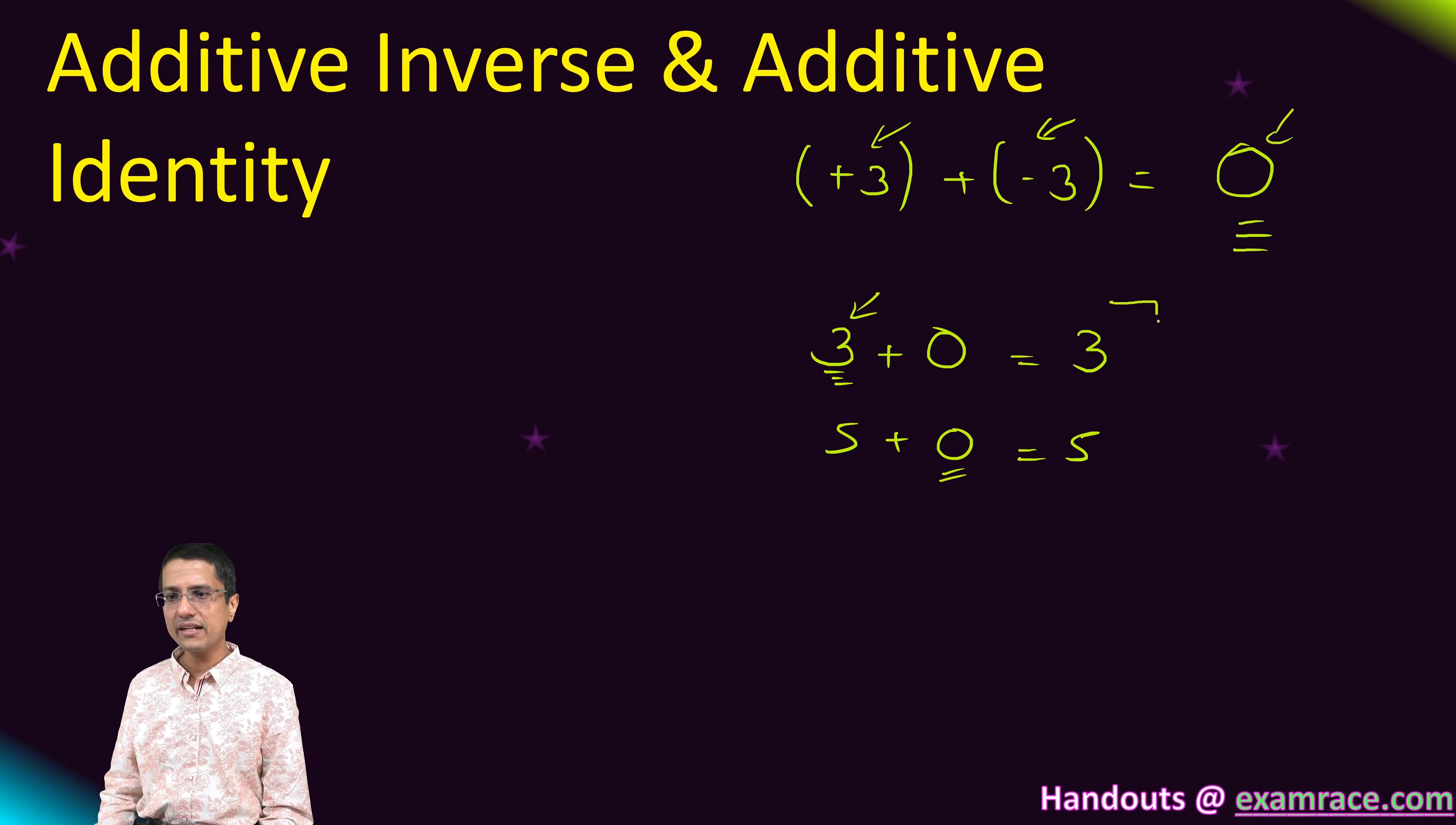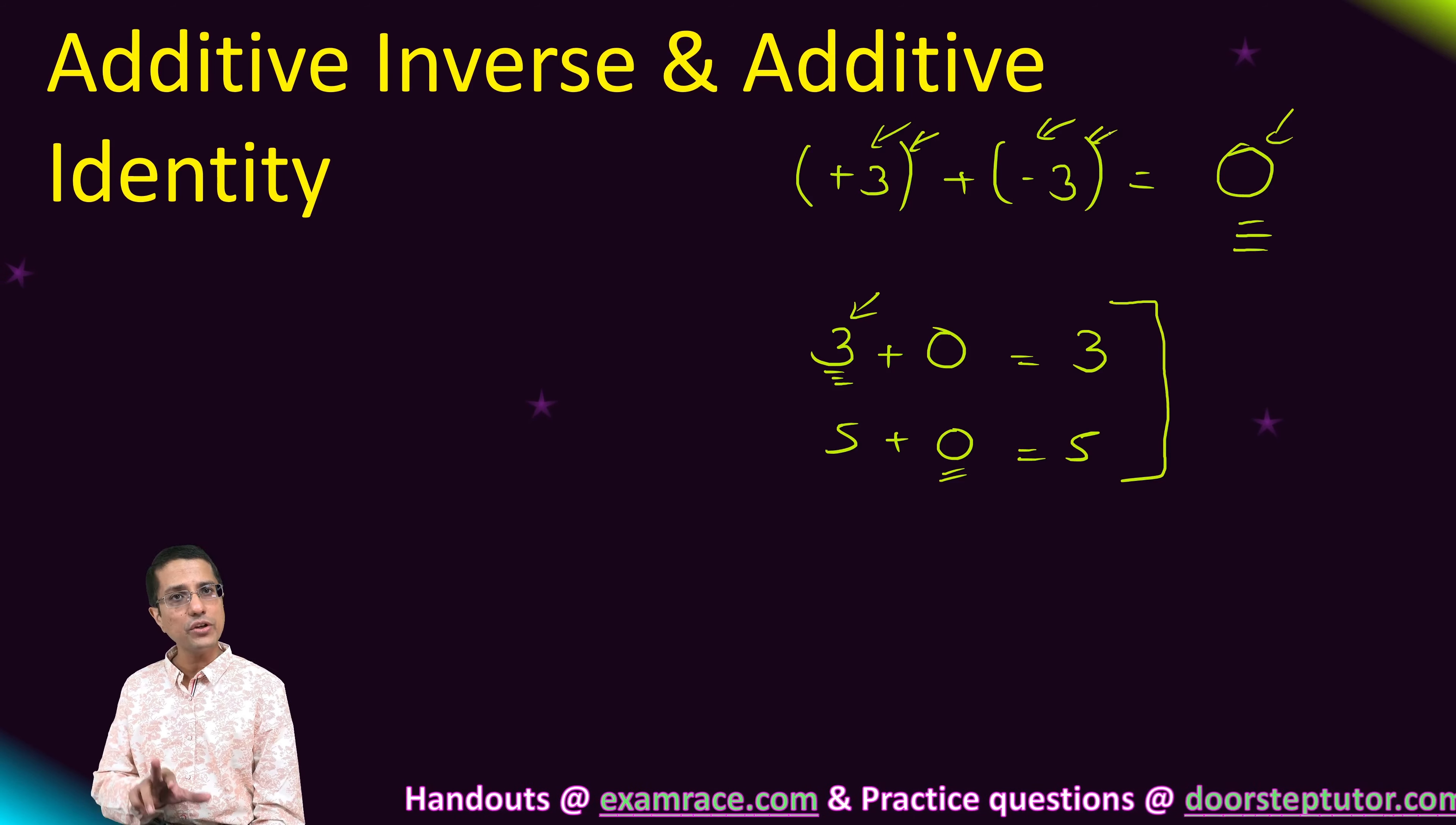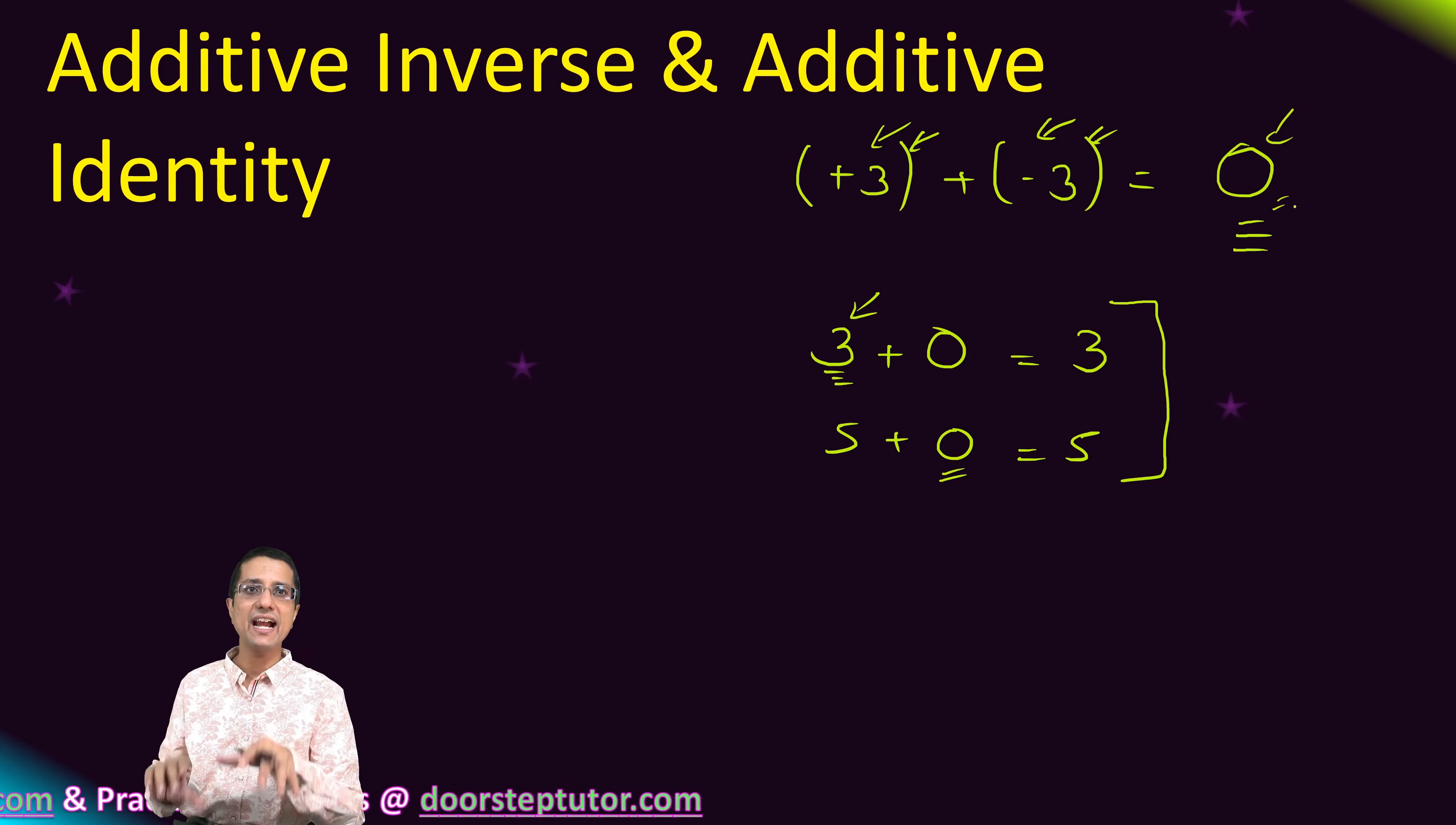But here, we are not defining additive identity. We are saying that if I add two numbers which are additive inverse of each other, I get back additive identity. So this is another property—the relation. We are relating the additive inverse and the additive identity.